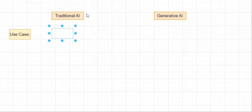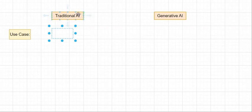Traditional AI can be used to process existing data. For example, if I provide some cat images to train my Traditional AI model and then provide one more cat image, it will identify the cat in that picture. So the main use case of Traditional AI is processing and recognizing existing data.